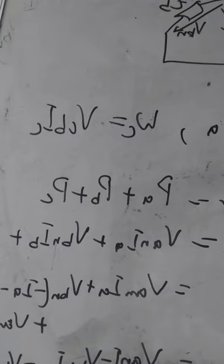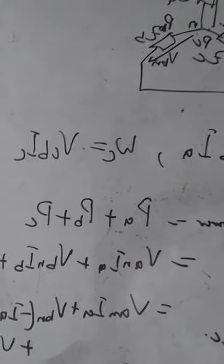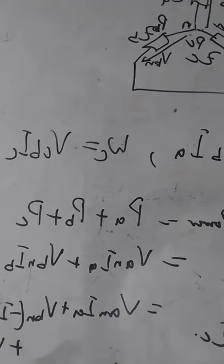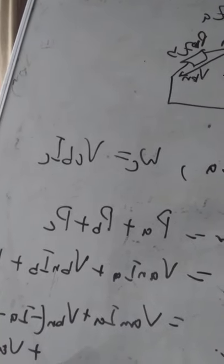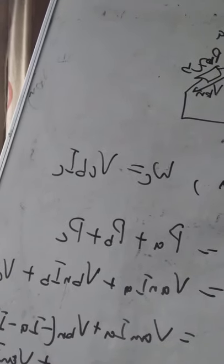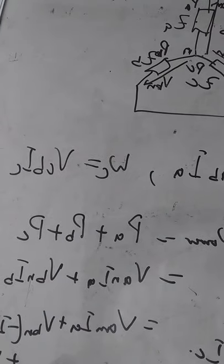Then finally we have, if you bring IA out because it's common, we have VAN minus VBN times IA. Then if you bring IC out, IC is common, plus VCN minus VBN times IC. So this will give you VAN minus VBN.